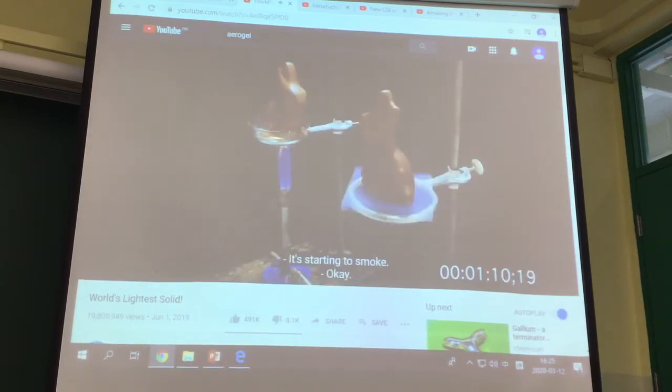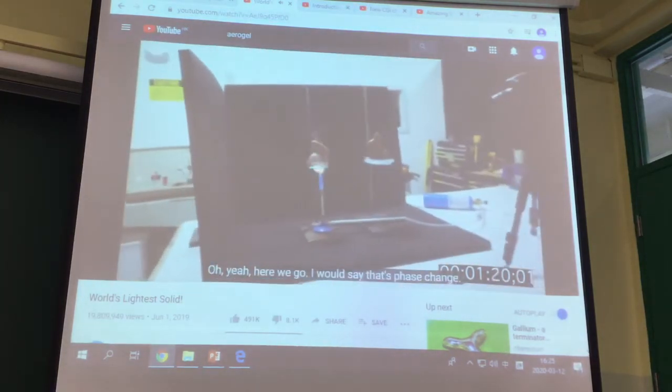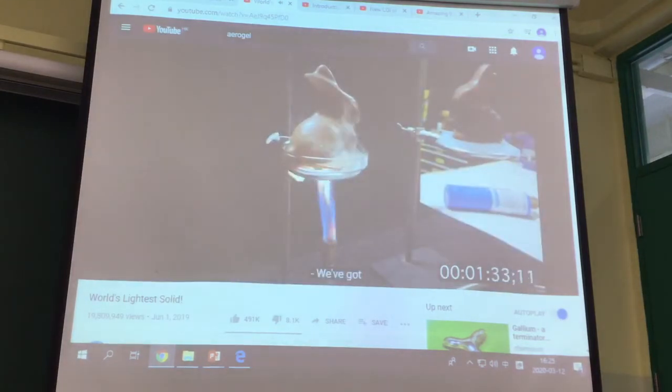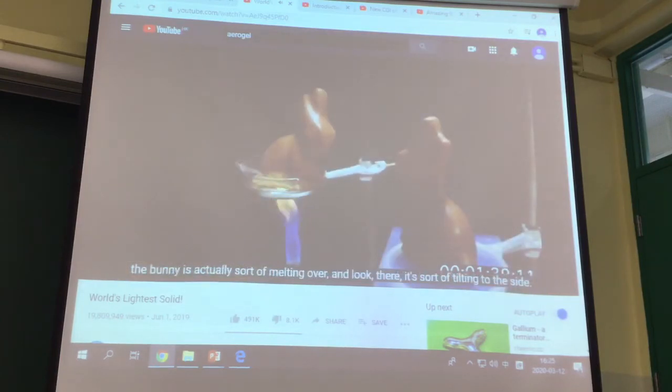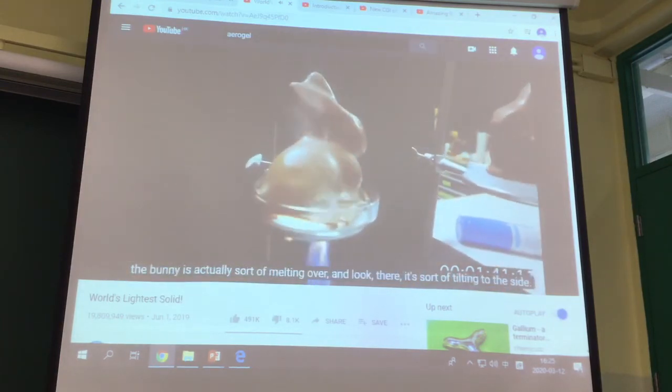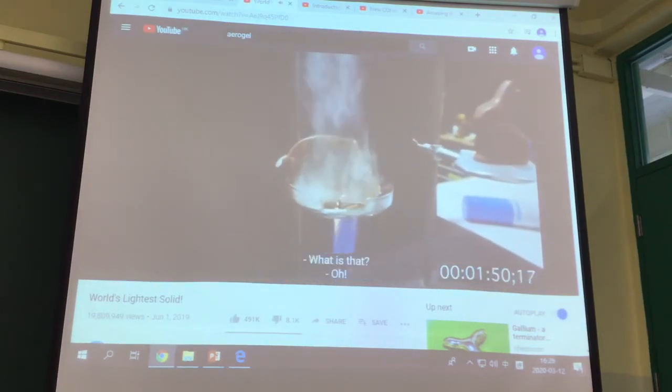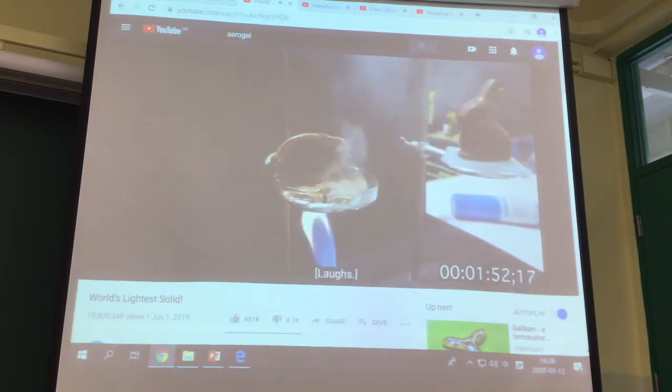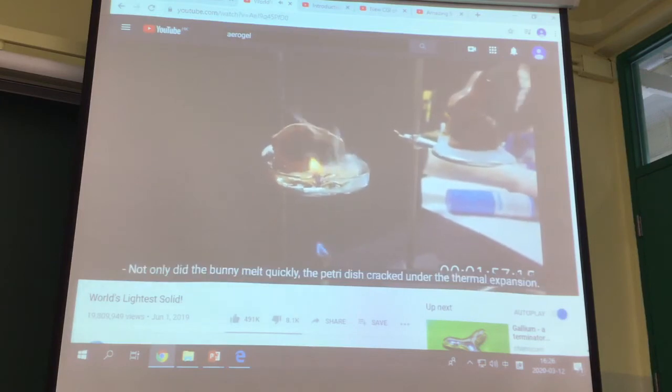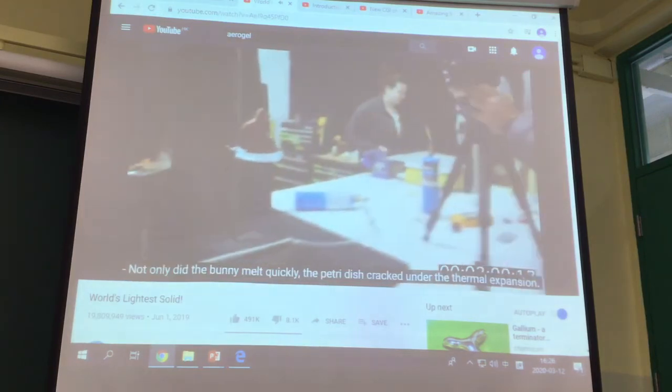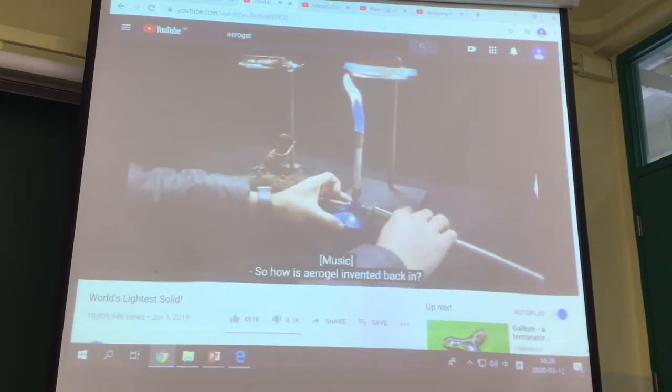We've got a liquid chocolate situation. We have some smoking bunnies. Over here the bunny is actually melting over. It's sort of tilting to the side. I think we're going to call that done. Not only did the bunny melt, the petri dish cracked under the thermal expansion. So now let's try aerogel. Oh my God. So how was aerogel invented? Back in 1931, a guy named Professor Samuel Kistler had a bet with his colleague Charles Learned.